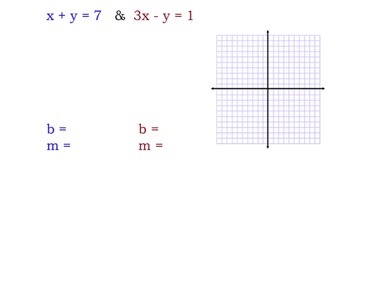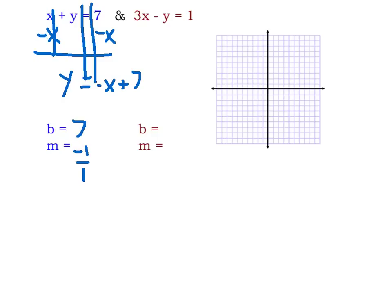Here is our second example that you should be writing in your notes. Our system will be the two equations x plus y equals 7, and 3x minus y equals 1. I'm going to start with the blue equation first, x plus y equals 7. I am not in slope-intercept form, so I need to do some inverse operations to get ourselves there. I'm going to subtract x on both sides, and that means our x's will cancel each other out. That's going to leave me with y equals negative x, or negative 1x if you prefer, plus 7. That means b is 7, my y-intercept point is positive 7, and my slope is negative 1 over 1.